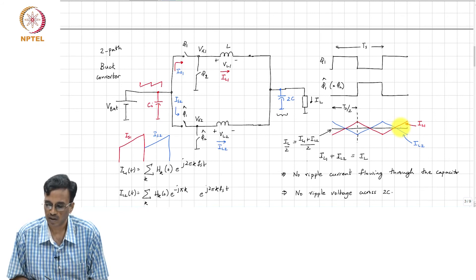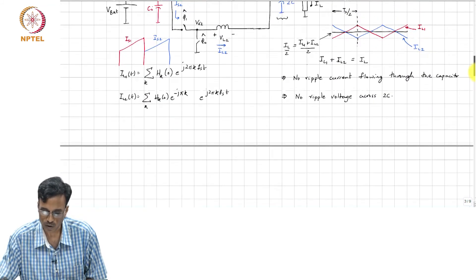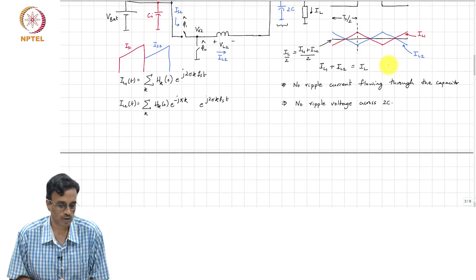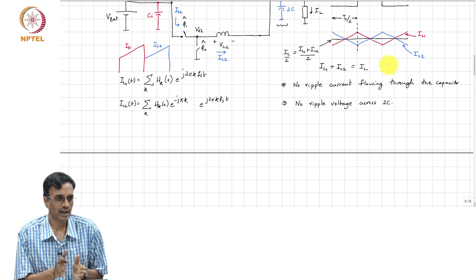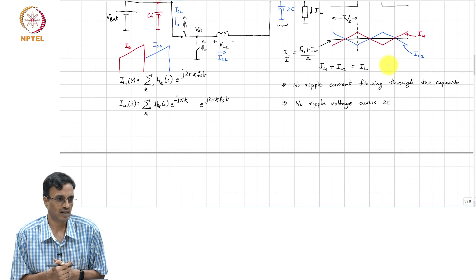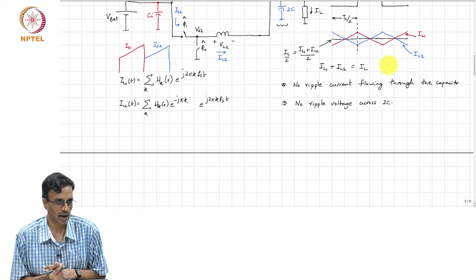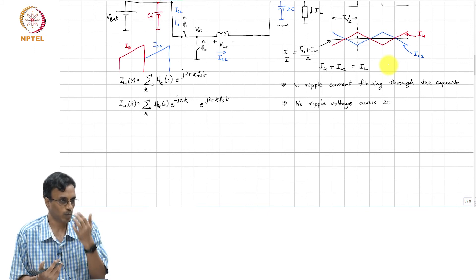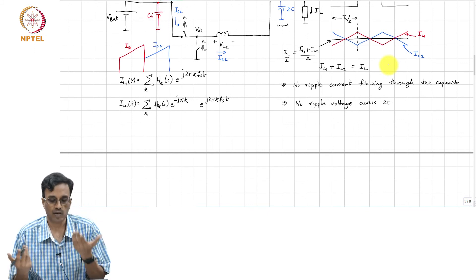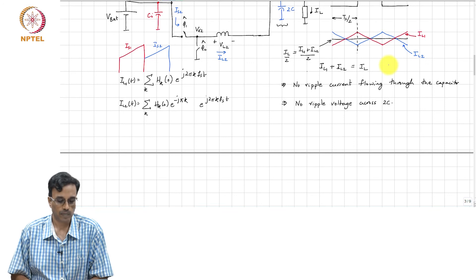Of course it turns out that the output ripple is 0 only at this particular duty cycle. If I change the duty cycle, then the cancellation will obviously not happen, but it anyway turns out that the ripple will be lot smaller than what it would have been in single phase case.